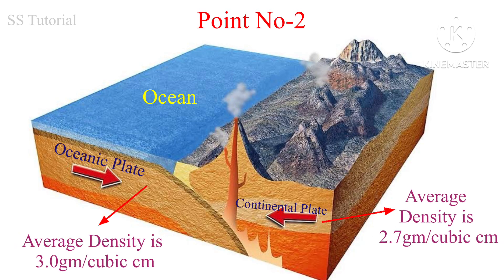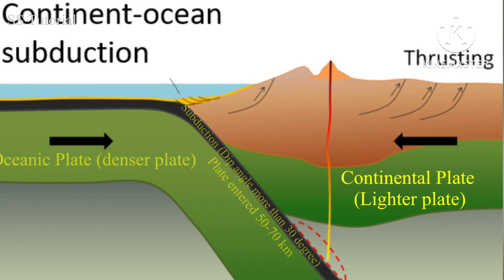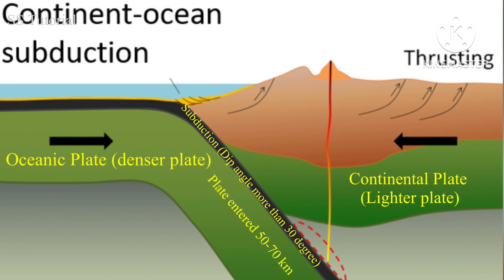The average density of a continental plate is 2.7 grams per cubic centimeter, and the average density of an oceanic plate is 3 grams per cubic centimeter. If two plates of different density collide, then the denser plate goes below the lighter plate and creates subduction.